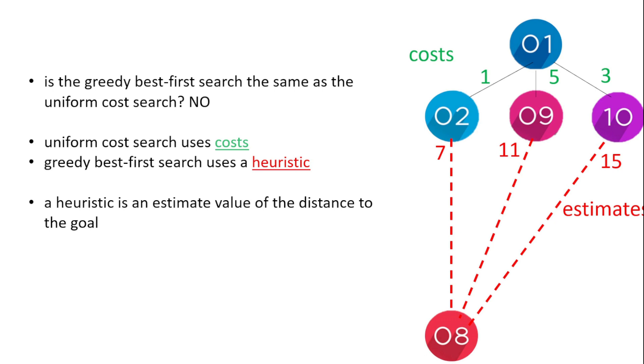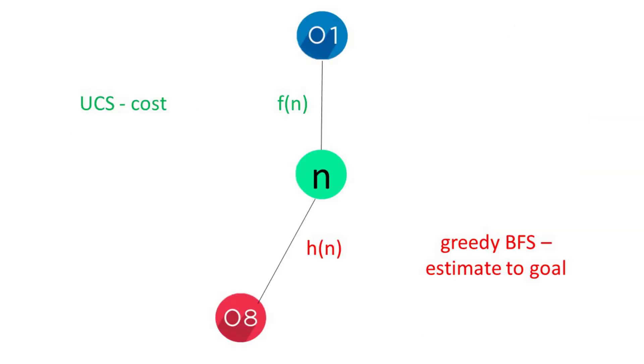The greedy best-first search uses an estimate to the goal, which is called a heuristic. A heuristic is the estimated value of the distance to the goal. So let's see these examples.